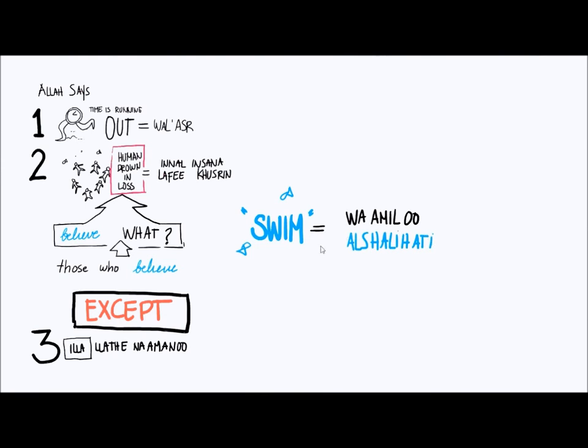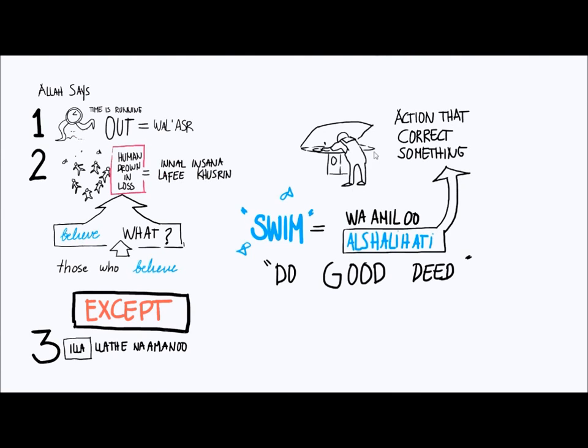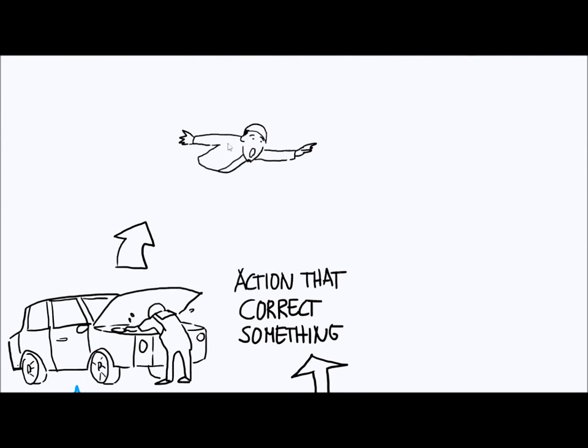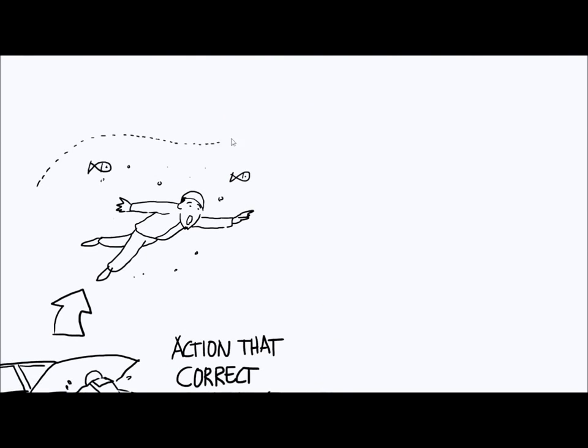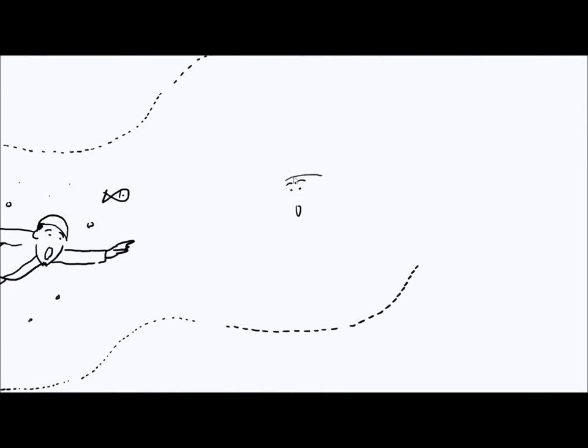How does Allah describe this action? Wa amilus-salihat, they do good things, they do things that help reconcile the situation. By the way, salih is an adjective here. Salihat jama'u mu'annath sanim, which literally means that which corrects something. Something was wrong and it corrects it. So they do actions that correct the situation, literally like the guy trying to swim.